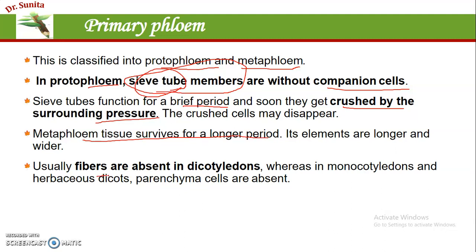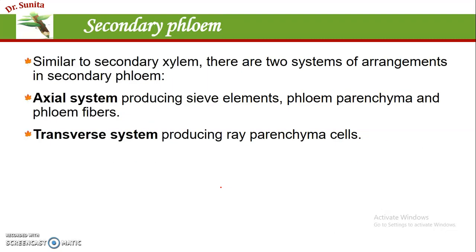Phloem fibers are absent in dicotyledons, whereas in monocotyledons or herbaceous dicots, phloem parenchyma is absent.